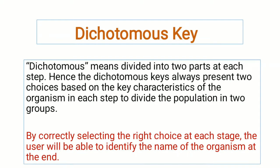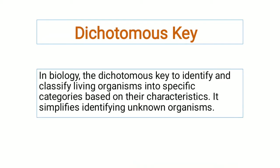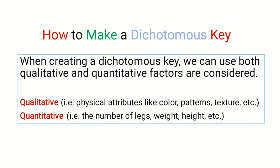By correctly selecting the right character at the right stage, you will be able to identify the living organism at the end. Dichotomous keys are basically used to identify and classify living organisms into different categories based upon their characteristics, making identification easier. What type of characteristics can you use while making a dichotomous key?